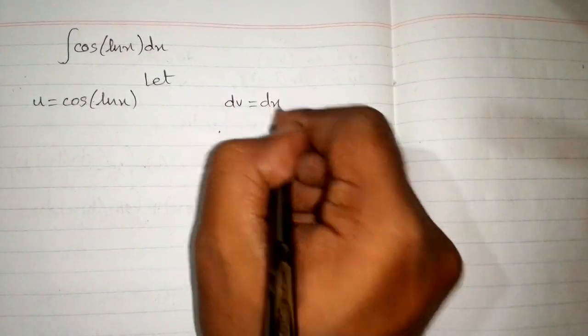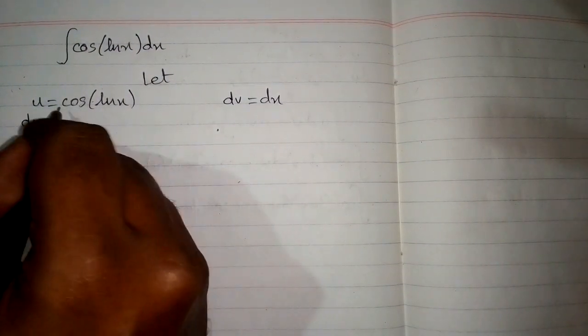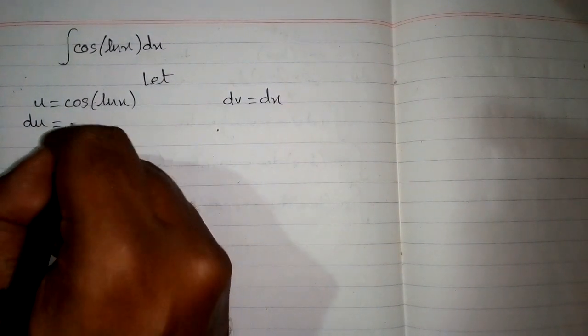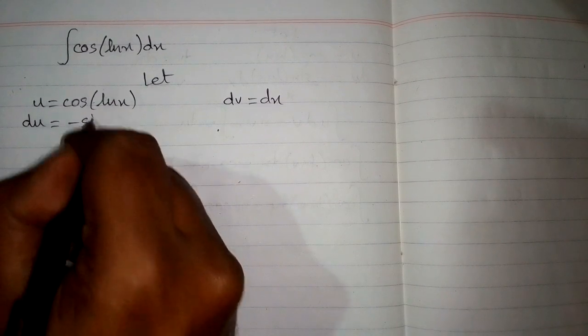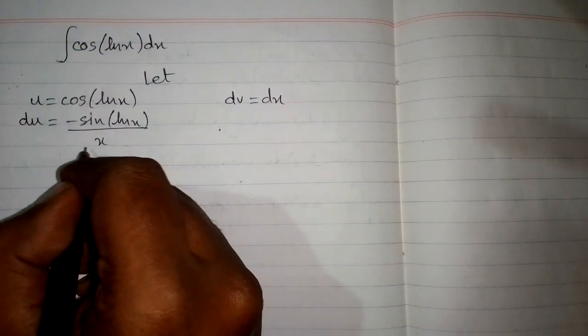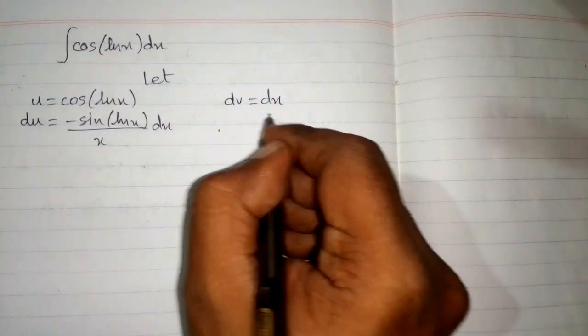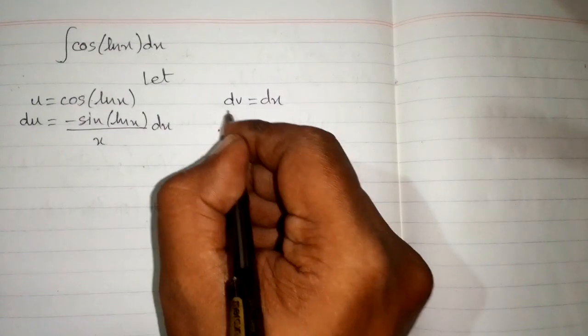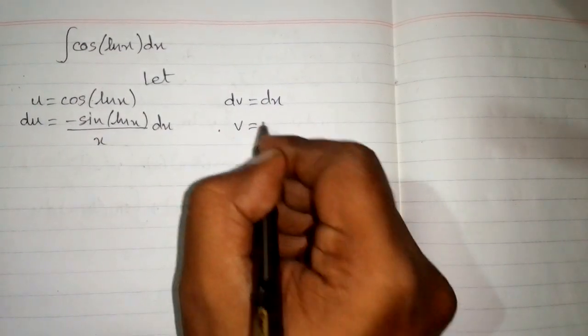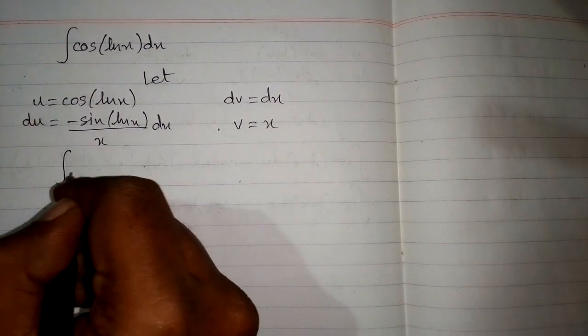The differential du is equal to the derivative of cosine of ln of x, which is minus sine of ln of x upon x, because the derivative of ln of x is 1 upon x, multiplied by dx. Integrating both sides, the integral of dv is v, and the integral of dx is x.